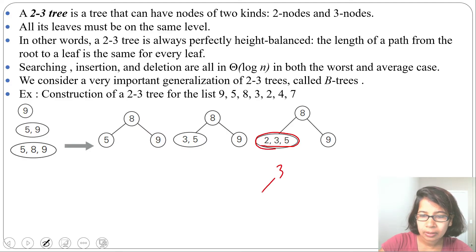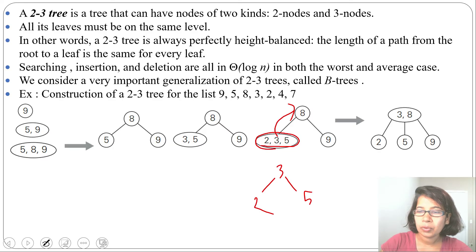We cannot do 2, 3, 5 because height will be unbalanced. We need to maintain the height. We will move this 3 with parent. So 3 and 8 will be parent. 2 will be its left side. 5 will be in between 3 and 8, so 5 will be middle side. And 9 will be its right side.